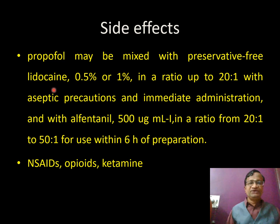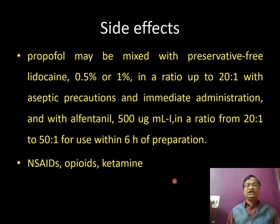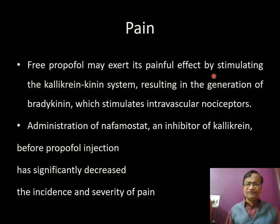Propofol may be mixed with preservative-free lignocaine in a ratio of 20:1 — for 10 mL of propofol, add 0.5 mL of 0.5% lignocaine. Other drugs — ketorolac, opioids, ketamine — have also been used to decrease pain on injection, which occurs in about 60% of patients. This is a major drawback. Propofol exerts its painful effect by stimulating the kallikrein-kinin system inside the vessel, producing bradykinins that stimulate intravascular nociceptors. Administration of nafamostat, an inhibitor of kallikrein, before propofol injection has significantly decreased the incidence and severity of pain. Nafamostat mesylate is available in India.